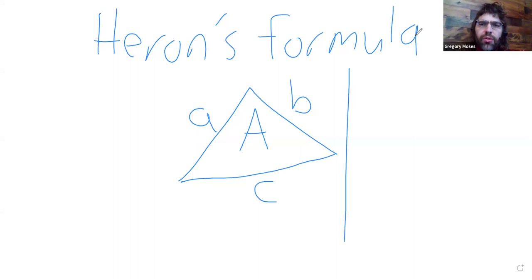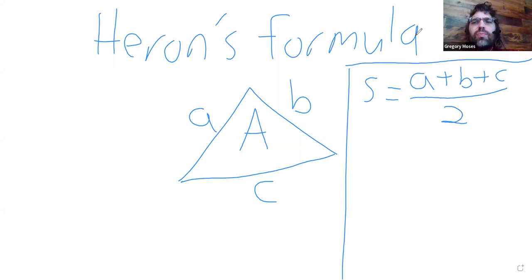I'll just give the formula. The formula is in terms of S, sometimes called the semi-perimeter. S is one half of the perimeter, so one half of the first side plus the second side plus the third side.